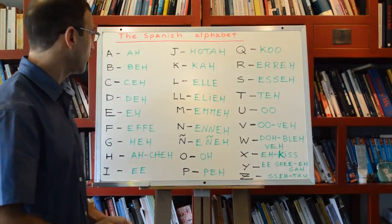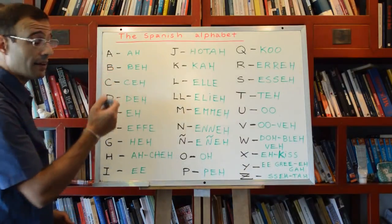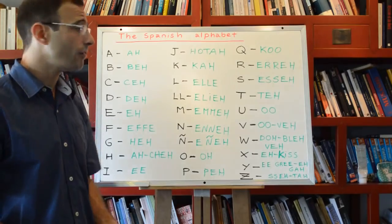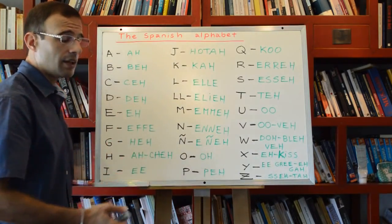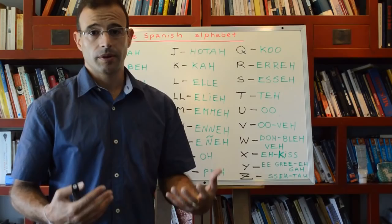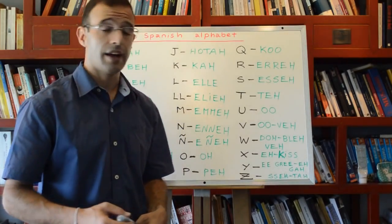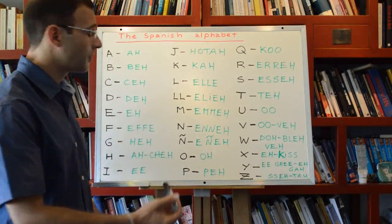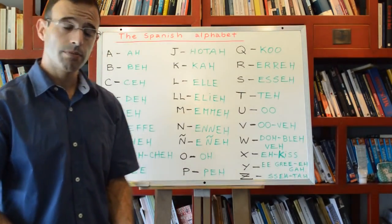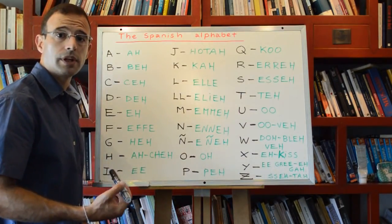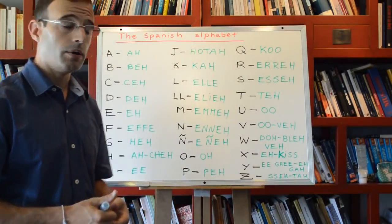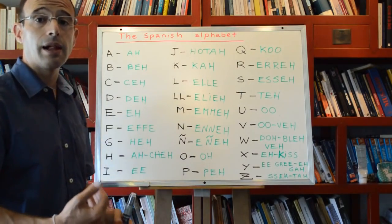So in black written, the letter, each letter from the Spanish alphabet and in green the phonetic, as correctly as I could make it up, how you would pronounce it reading it in English. But of course I'll help you so you can pay attention to my own pronunciation on how to pronounce each Spanish letter and I'll help you to pronounce Spanish sounds.